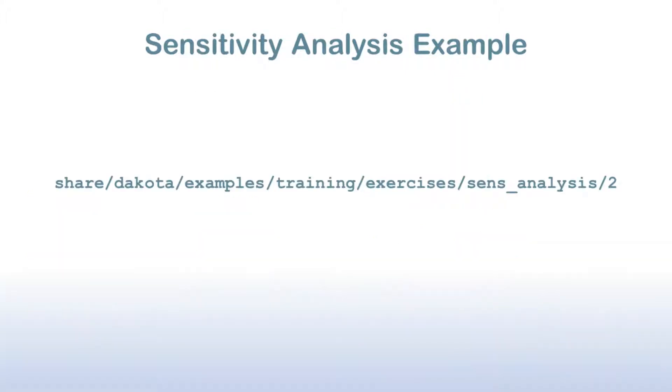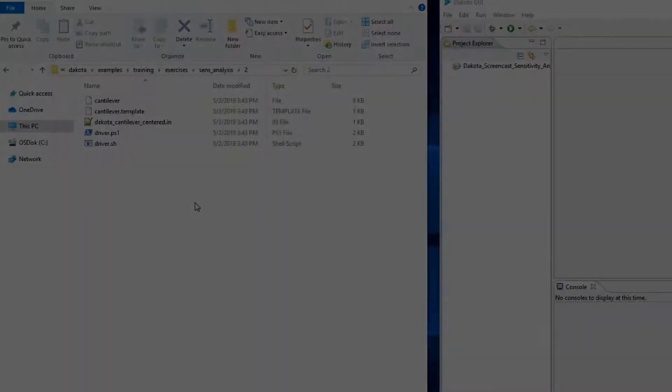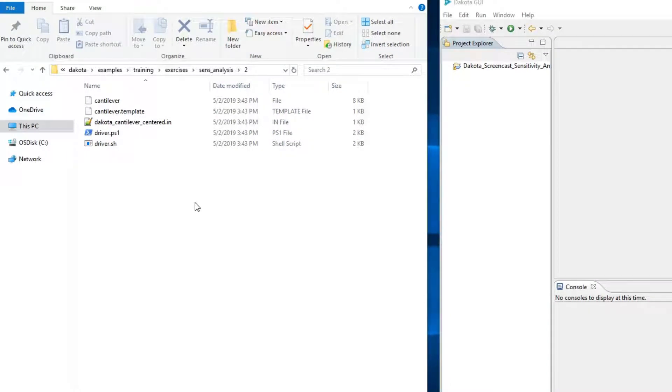The files used in this example can be found at this path in the Dakota install directory. Let's add these files to a new project in the Dakota GUI, and then modify the Dakota input file to make it suitable for a sensitivity analysis study.